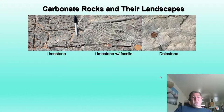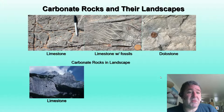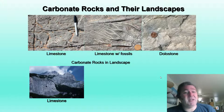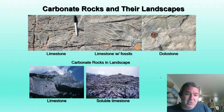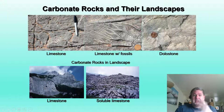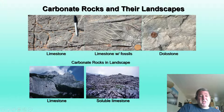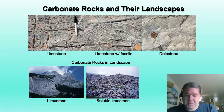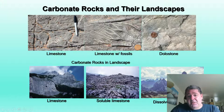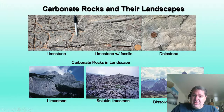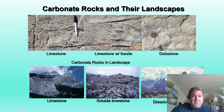Limestone often forms the backbones of mountains, especially if it's been dolomitized and turned to dolostone. Limestone with fossils creates little voids and spaces and can create what's known as karst topography (K-A-R-S-T), or cave topography. These used to be big cave caverns, and now that limestone has been eaten away so the caves are open to the air.